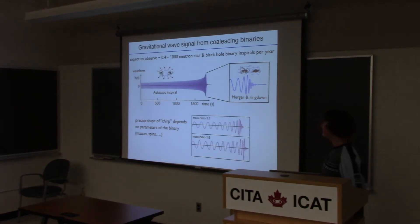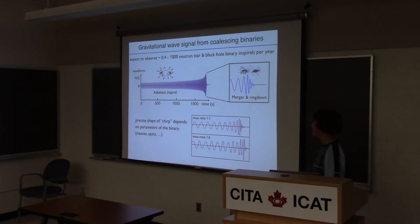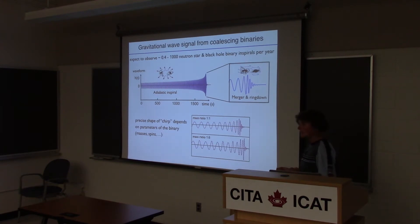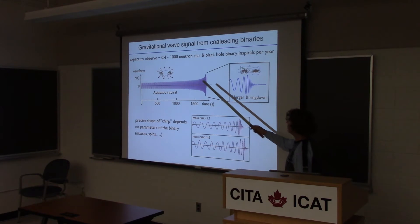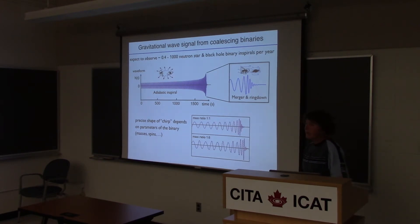One of the key sources for these detectors are the coalescing binaries. We don't know exactly how many are expected to be observed because there are large uncertainties in binary formation and evolution. The idea is that LIGO would measure a rate and then constrain the models of binary evolution. Roughly extrapolating from pulsars we see in our galaxy, a lower limit on the event rate is about 0.4 events per year, and an upper limit is set only by the fact that initial LIGO didn't see anything — so it could still be hundreds to thousands per year.